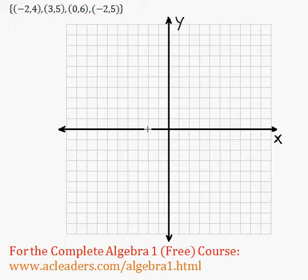With negative two and four, which is right here, then we have point three and five right there, then zero and six, and negative two and five. Okay, so that is a relation - just these four points right here.